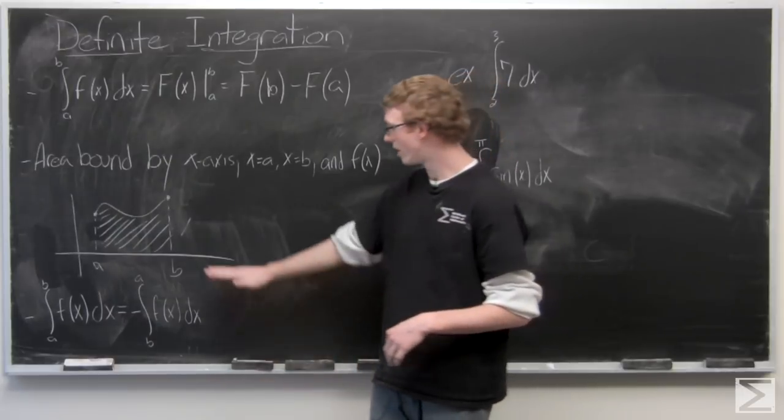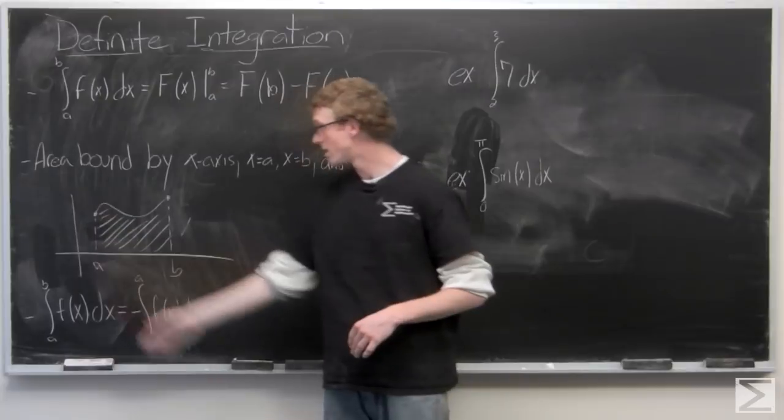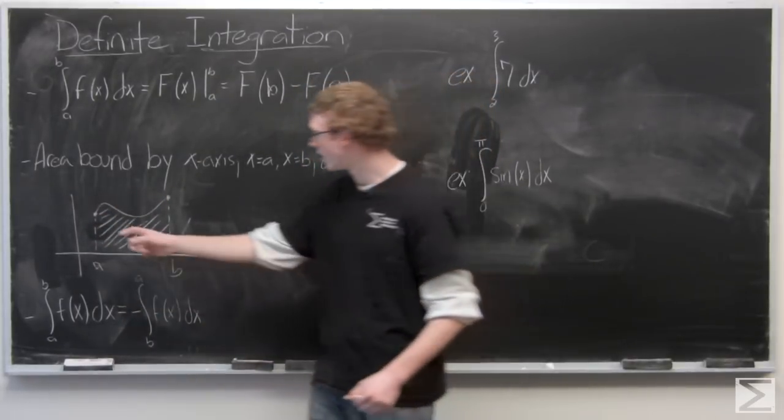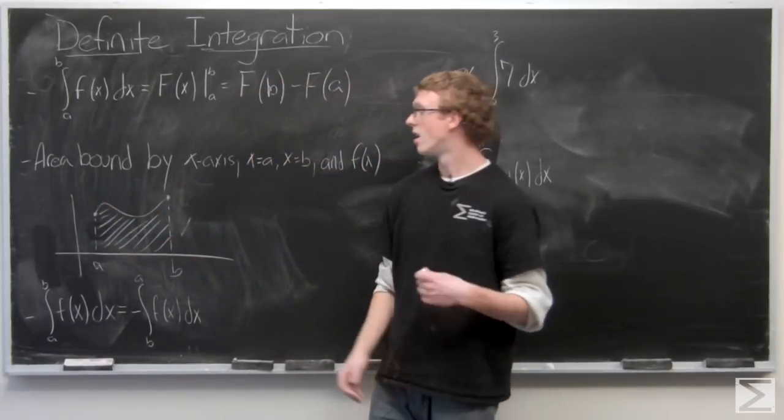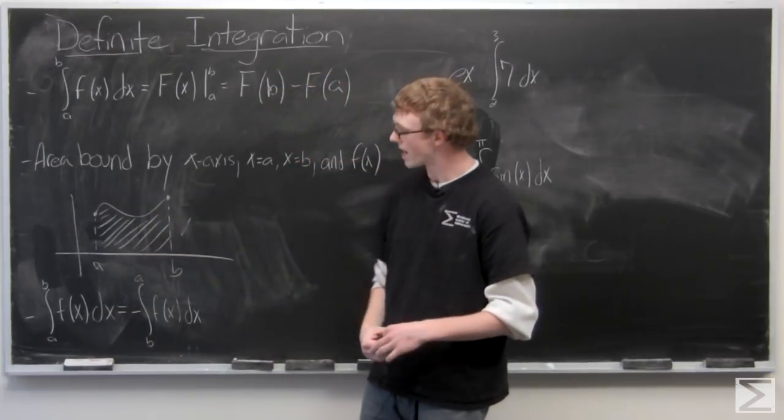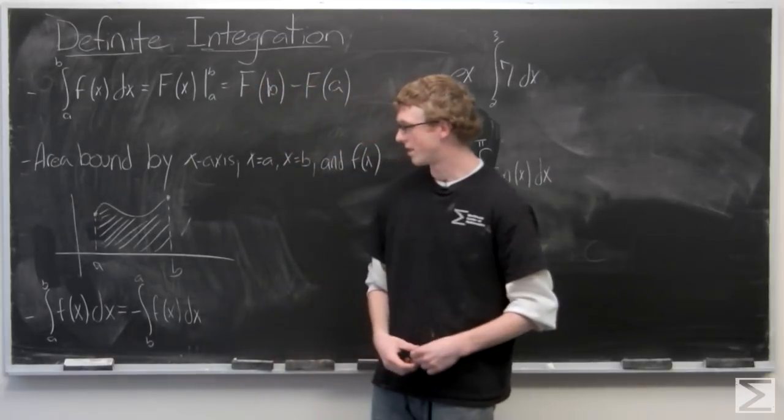the line x equals a which would be this, the line x equals b, and f(x). So say this is our function right here, we have the line x equals a, x equals b, and the x-axis. Typically in integration the area above the x-axis is regarded as positive and the area below the x-axis is going to be regarded as negative.